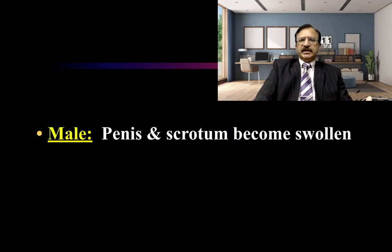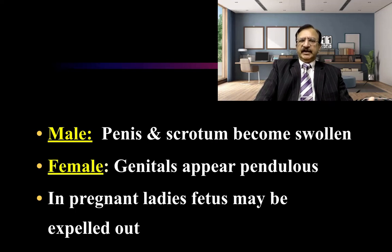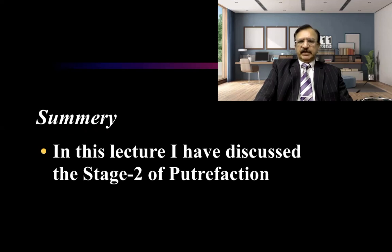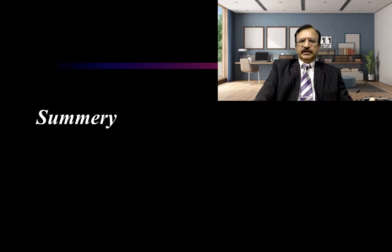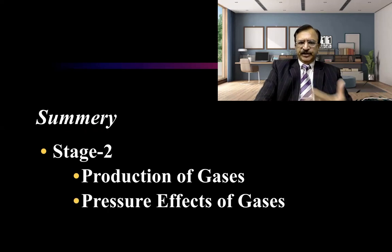The condition of the genitalia is that the penis and scrotum are swollen, and female genitalia appears pendulous. In pregnant ladies, the fetus, if present, is expelled out. So, the summary of this lecture is that we have discussed stage two of putrefaction. In stage two, there is production of gases, and because of the production of gases they put pressure, and because of the pressure there are certain effects.